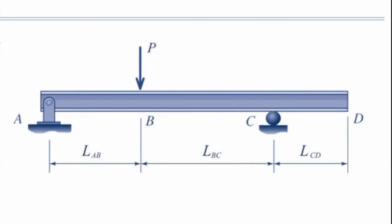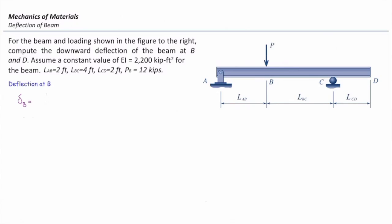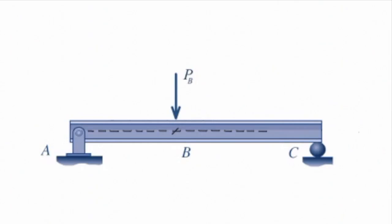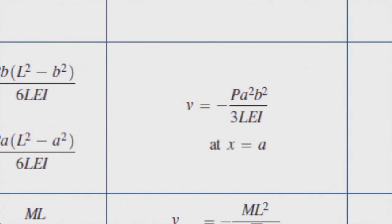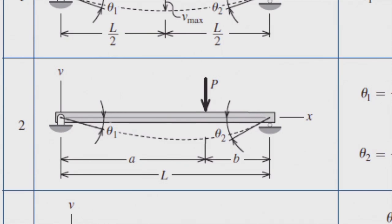Let's talk about deflection at point B first because that would be easier. To determine deflection at point B, we need to split our structure into simple parts. There is no loading acting on the right part, so we can simply ignore that part, remove the segment from C to D, and consider the simply supported beam. Using case number 2 from the table, deflection at x equal to A is given by: δ = Pa²b² / (3LEI), where a is the distance of the force to the left, b is the distance to the right, and L is the overall length.